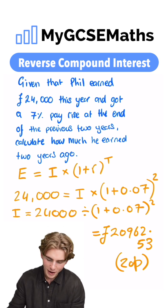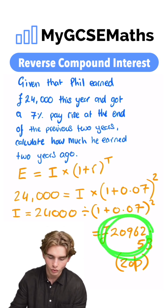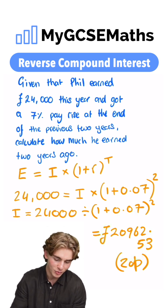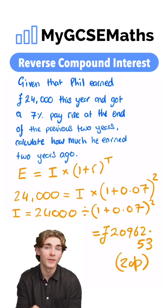You could check that if you wanted to by increasing this by 7% twice. And you would see that we would end up with 24,000. So we know we must be right.